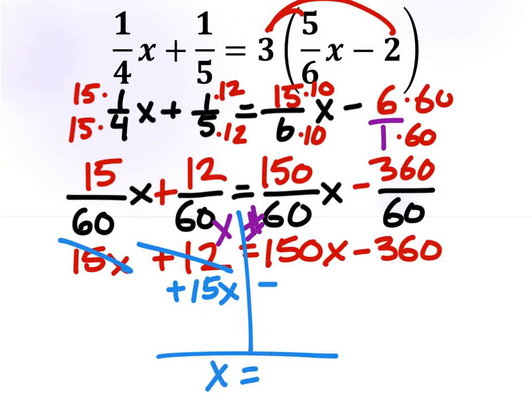Positive 12 will switch sides, so we switch the sign. If it crosses the line, we change the sign. 150x is on the wrong side, so it will switch to a negative 150x. And a negative 360 stays on the right side, it's a negative 360.